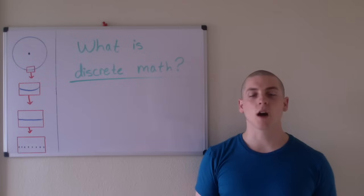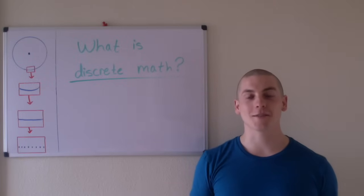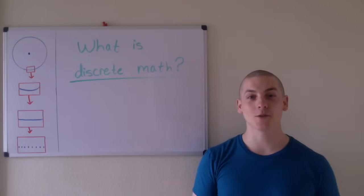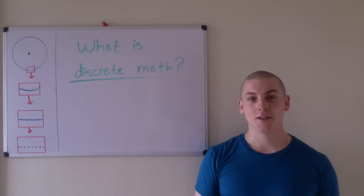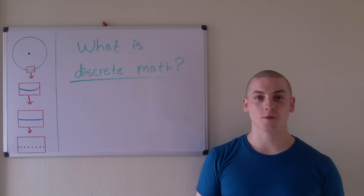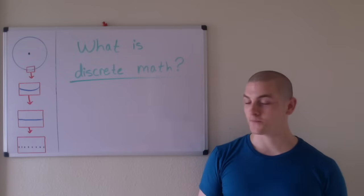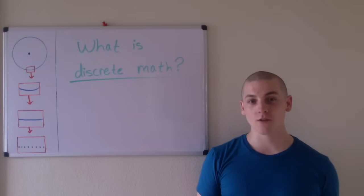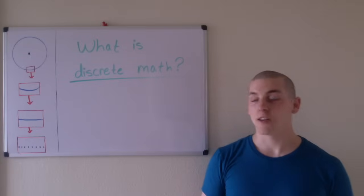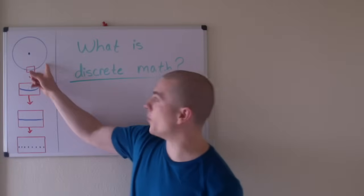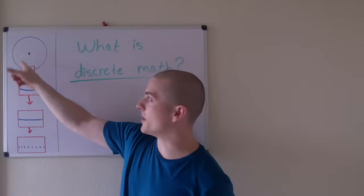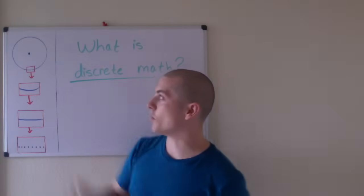Now you may be thinking, I never use math that involves infinite sets, but I promise that you do. The simplest example is with a circle. A circle, by definition, is an infinite number of points equidistant from a fixed point.